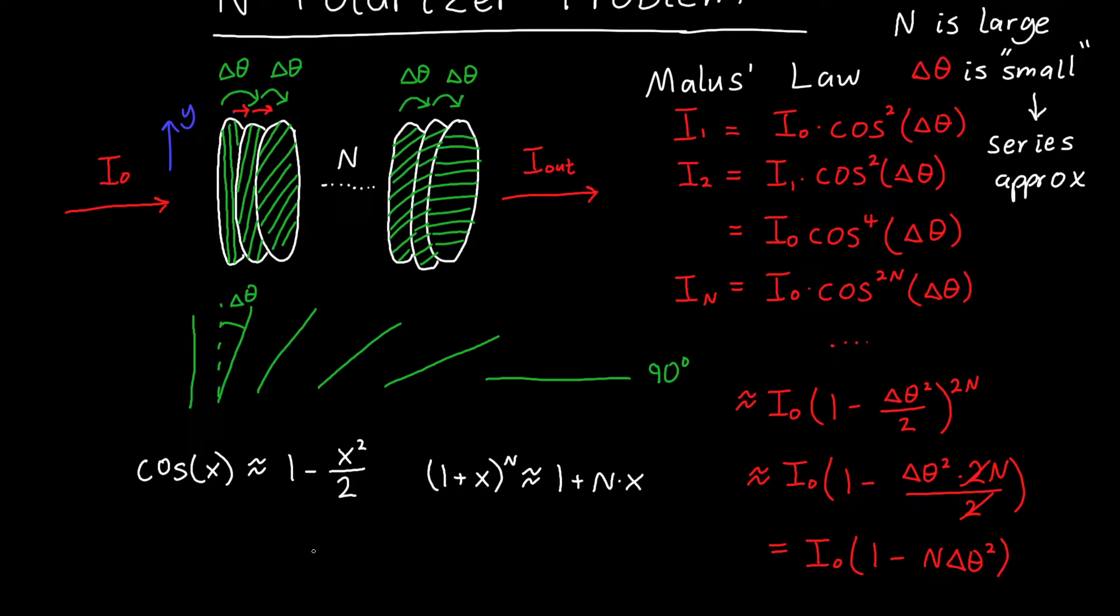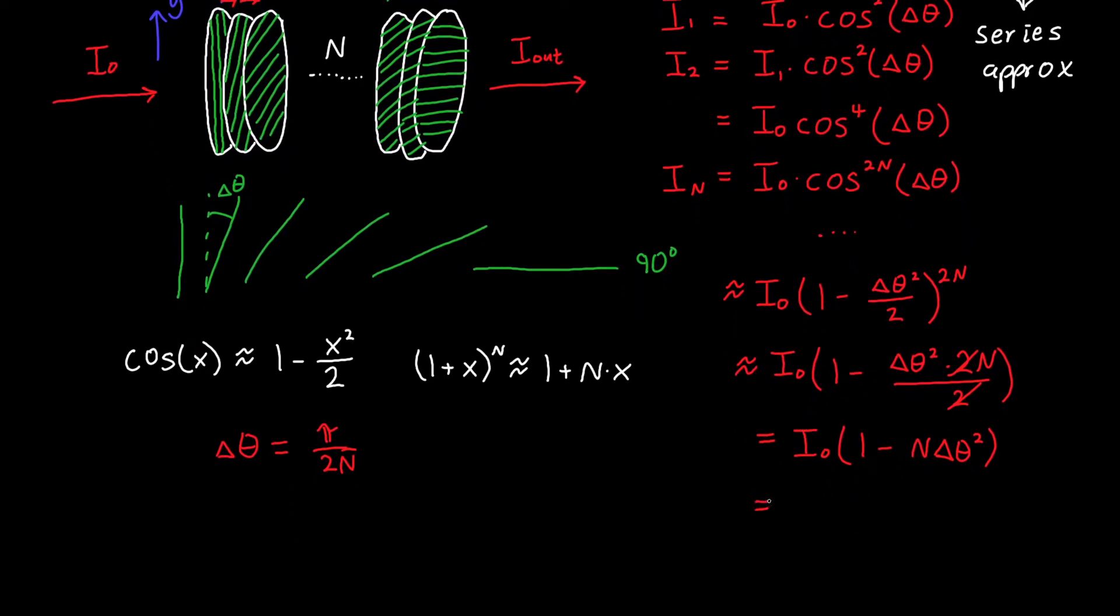Finally, we can plug in, because we know that Δθ is just equal to our maximum rotation, which is π over 2, divided by the number of polarizers, divided by n. So our Δθ is π over 2n. If we plug that in here, we'll get I₀ times (1 minus π² over 4n).